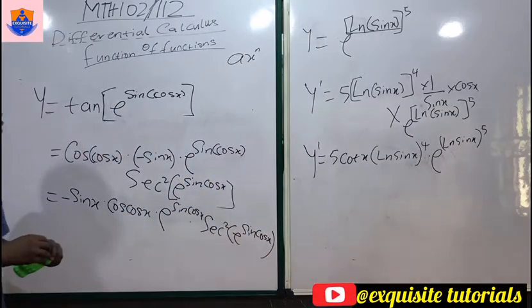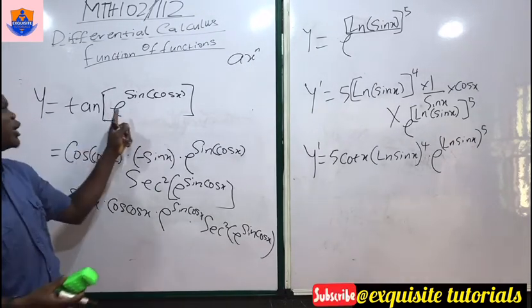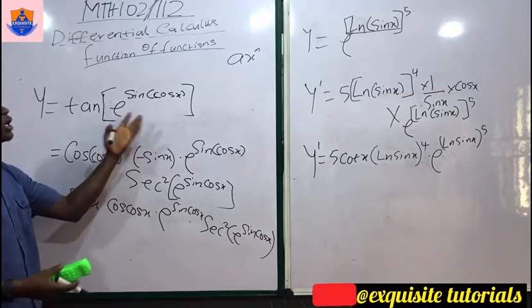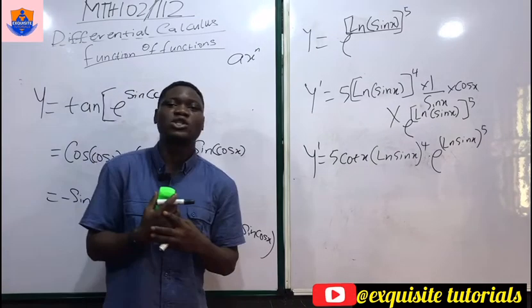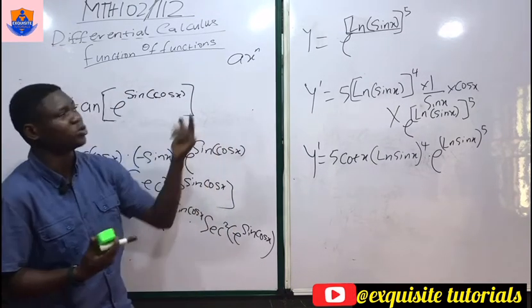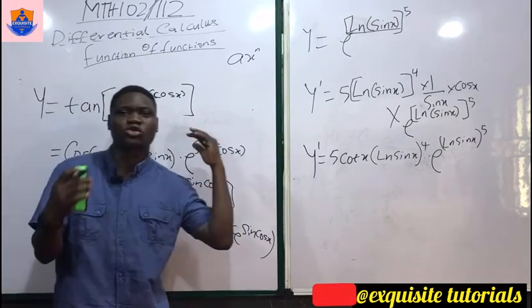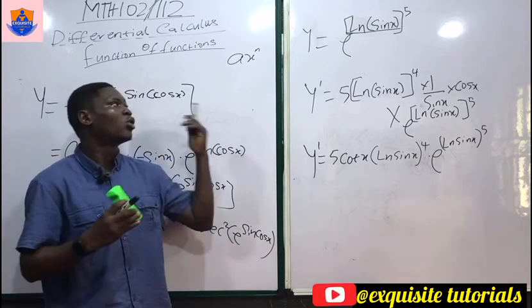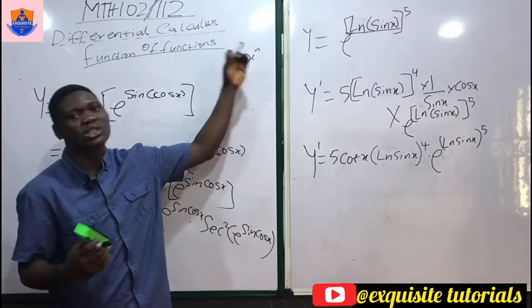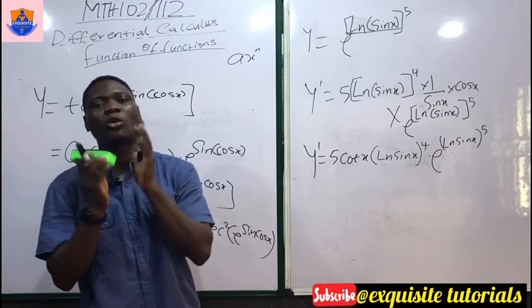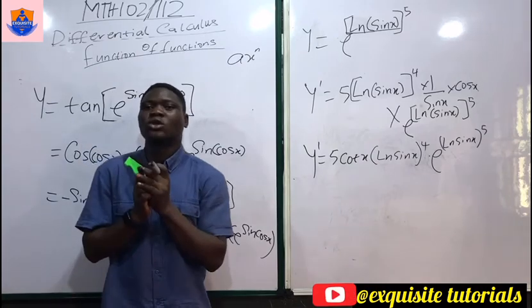This is our final answer. If you want to follow the long procedure, let u = e^(sin(cos x)) and differentiate separately. That's basically all for this video. Please don't forget to like and subscribe. If you have any issues with functions of functions, state it in the comment section and I will do more videos. Thanks for watching.